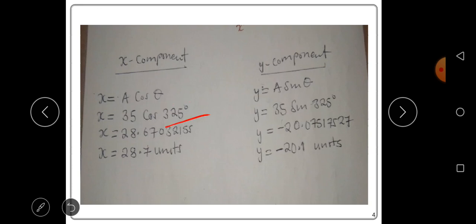When you punch that into a calculator, you get 28.67. This can be written in three significant figures to be 28.7 units.